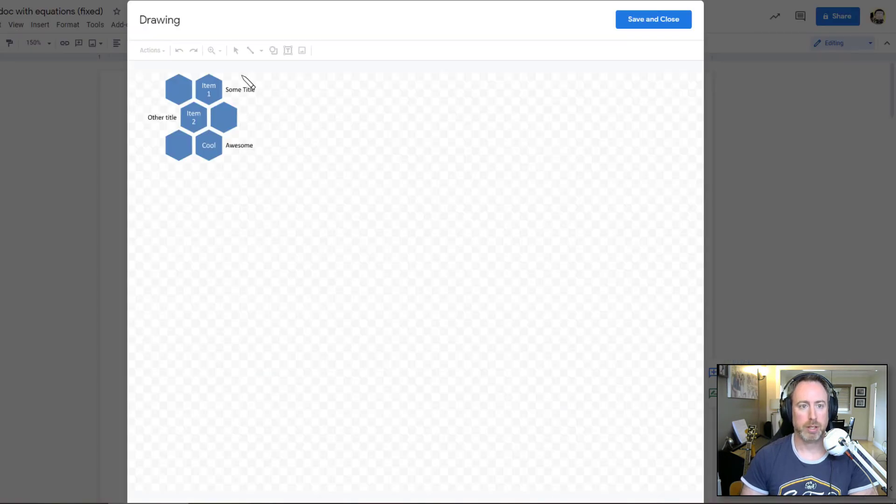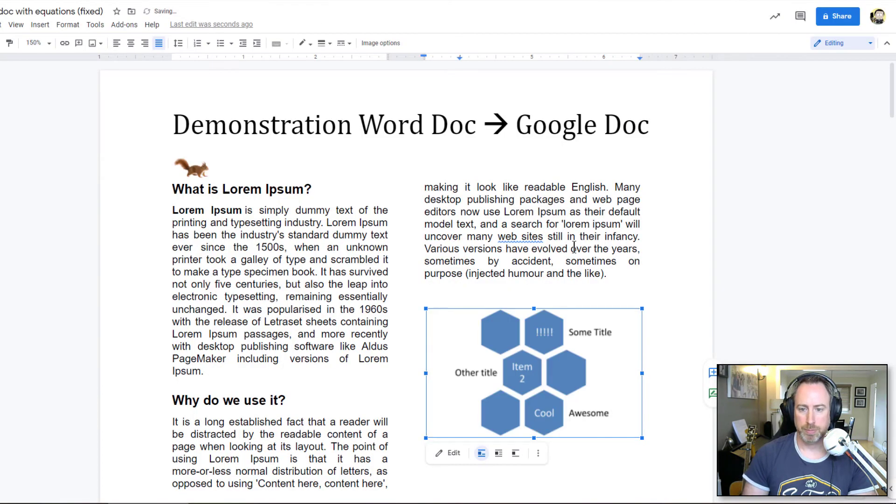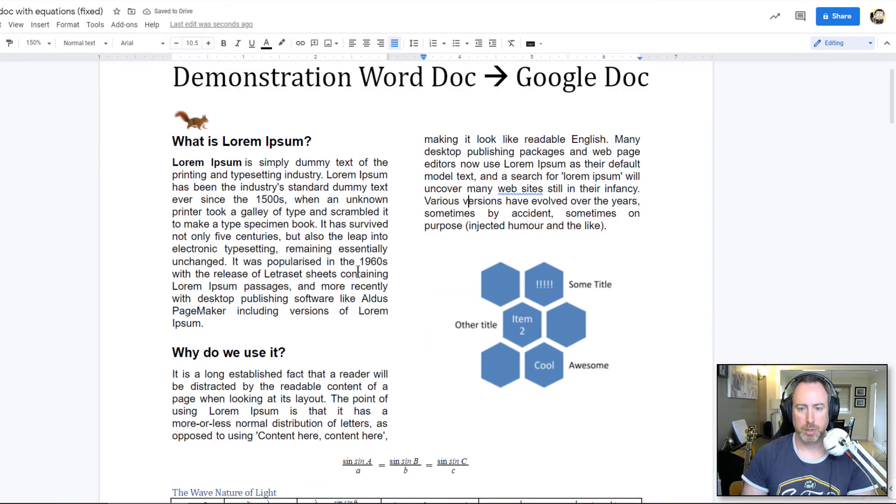Actually here, let's modify it. Let's say instead of item one, let's just put a bunch of exclamation points, save. Yup. That is an editable object. I like that.